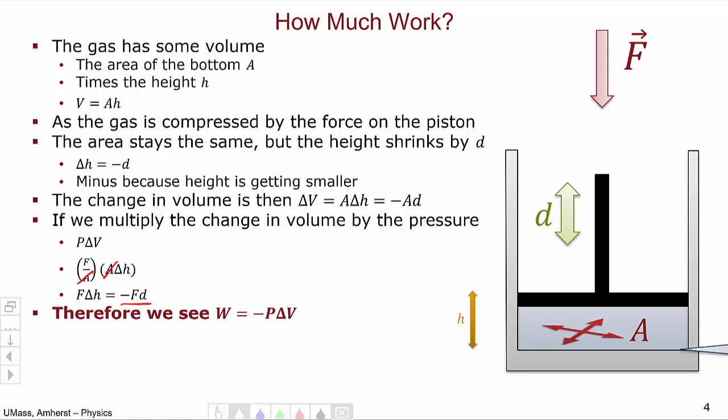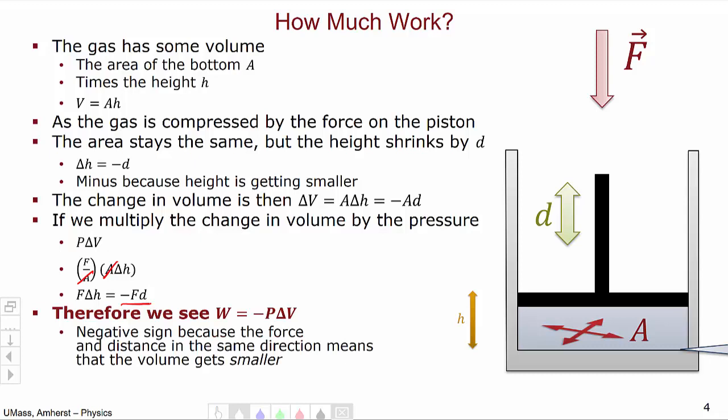So, therefore, we can conclude that the work done on the gas is minus the pressure of the gas times the change in volume. Where, again, this negative sign is because if the force and the displacement are in the same direction, that means the volume of the gas is going to get smaller. So, a positive work on the gas will result in a smaller volume, a negative Δ V.